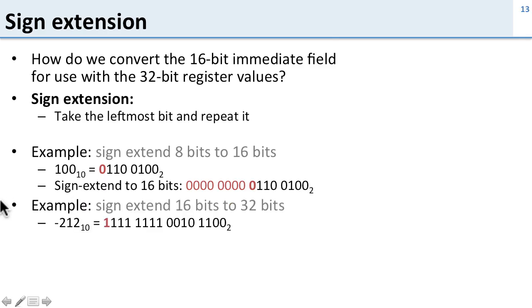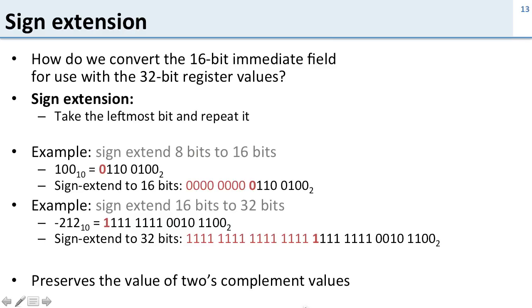We can do the same thing for extending 16-bits to 32-bits. Here's a number, -212, which is going to have a lot of ones up here at the front, and when we sign extend it we get a whole bunch of ones at the front as well, but it's still -212. Now we can use it with other 32-bit numbers. So sign extension is very useful because it preserves the value of two's complement values.